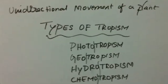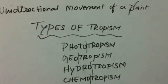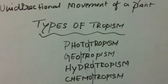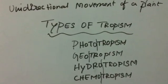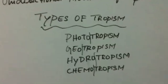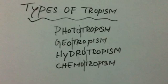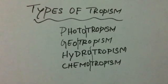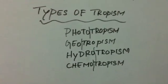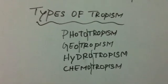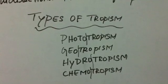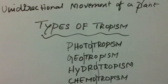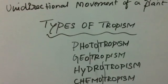Phototropism is the movement of a plant towards sunlight. An example is the shoot of a plant. Next is geotropism — 'geo' means gravity. Geotropism is the movement of a plant in response to gravity.